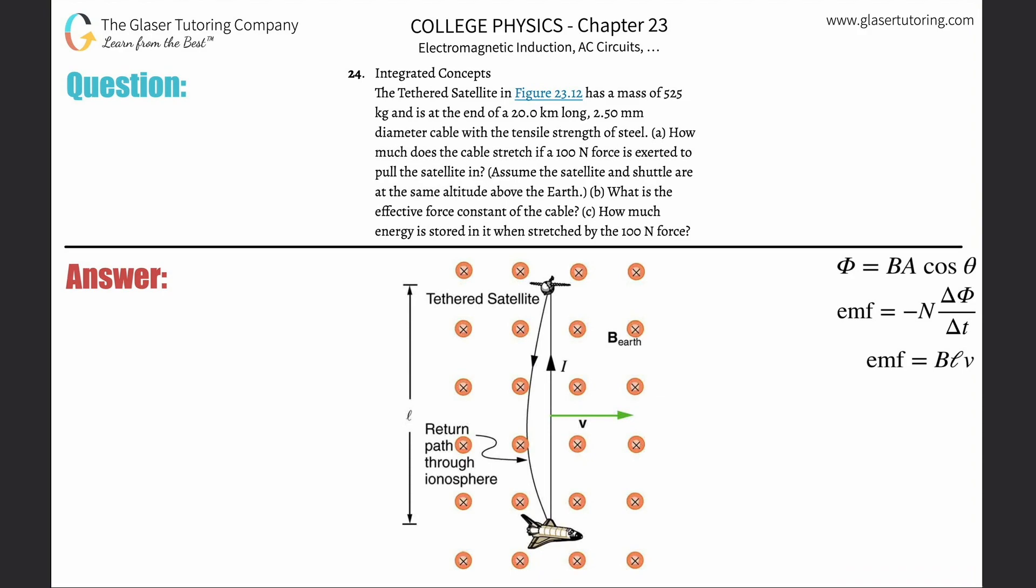Number 24, integrated concepts. The tethered satellite in Figure 23.12 has a mass of 525 kilograms and is at the end of a 20 kilometer long, 2.5 millimeter diameter cable with the tensile strength of steel. Letter A: How much does